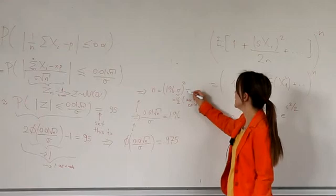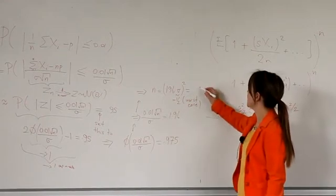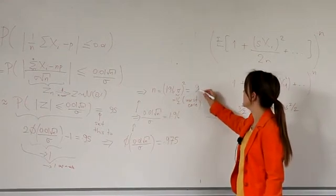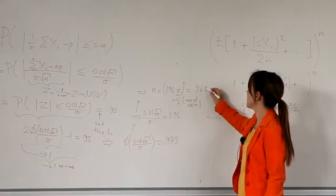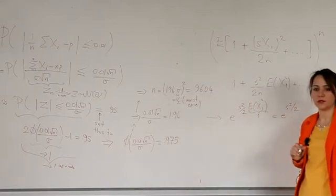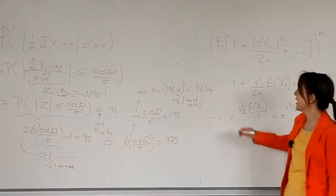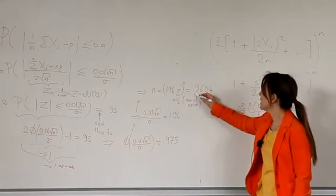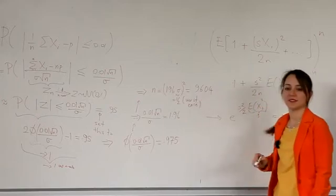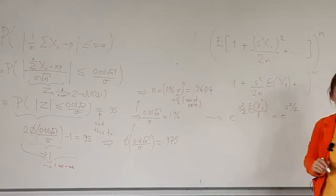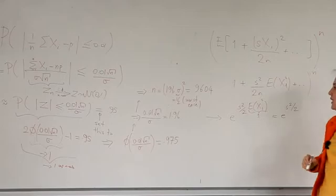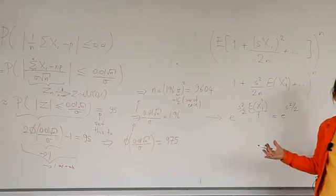We find that, I think, 9,604 is the result. I didn't just compute this, I pre-computed it. So, around 9,600 people will be enough. It's better than 50,000.